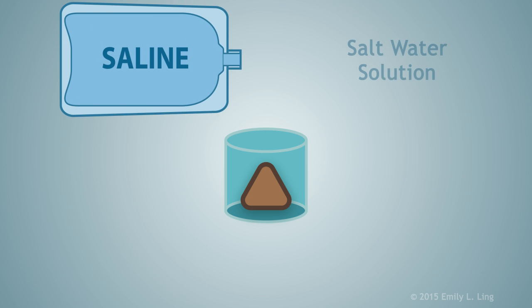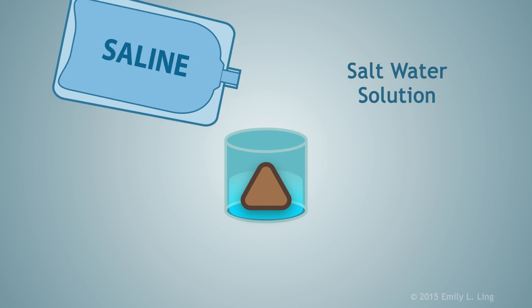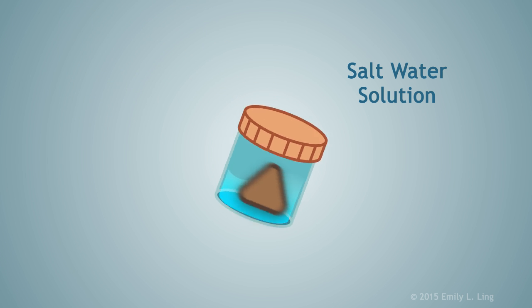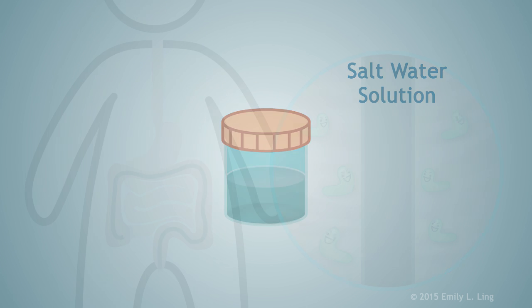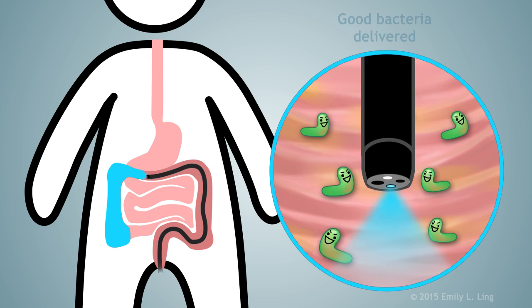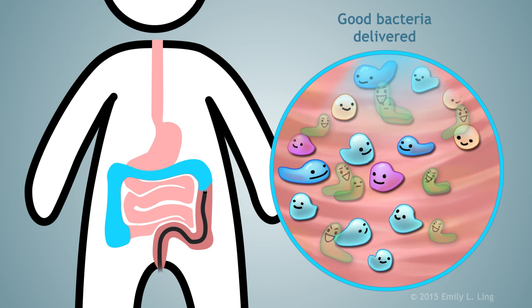First, the stool is prepared by blending it with normal saline, which is a saltwater solution. Using a colonoscope, this mixture can be applied to the entire length of the colon.